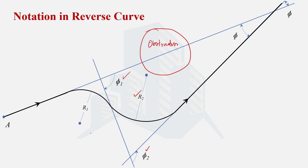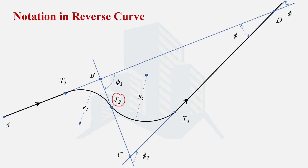Let's say the starting point of the route is A. The start point of the first curve is called tangent point T1, and B is the point of intersection of the backward and forward tangents of the first curve. The end point of the first curve — which is also the start point of the second curve — is T2, and C is the point of intersection of the tangents of the second curve. T3 is the end point of the second curve, and D is the point of intersection of the backward and forward tangents of the overall reverse curve. The point T2, being common to both curves, is called the point of reverse curve.